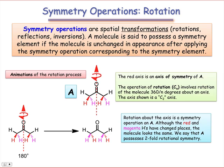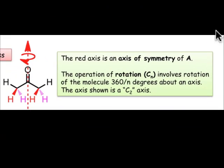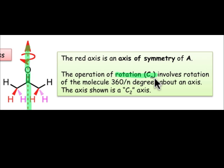We can test for the presence of rotational symmetry by a method completely analogous to that used for reflection, except now the rotation operation is defined by an axis of symmetry and rotates the molecule about that axis by a certain number of degrees. We call that axis a C sub n axis, where n is an integer that defines the degree of rotation. 360 divided by n gives us the amount we're going to rotate the molecule about the axis.